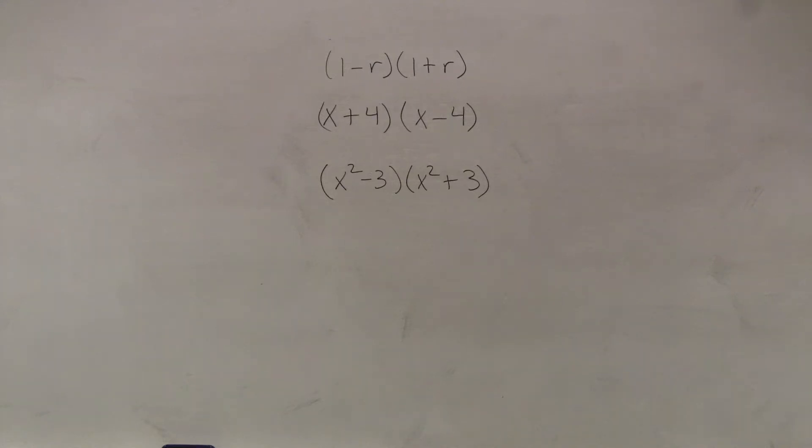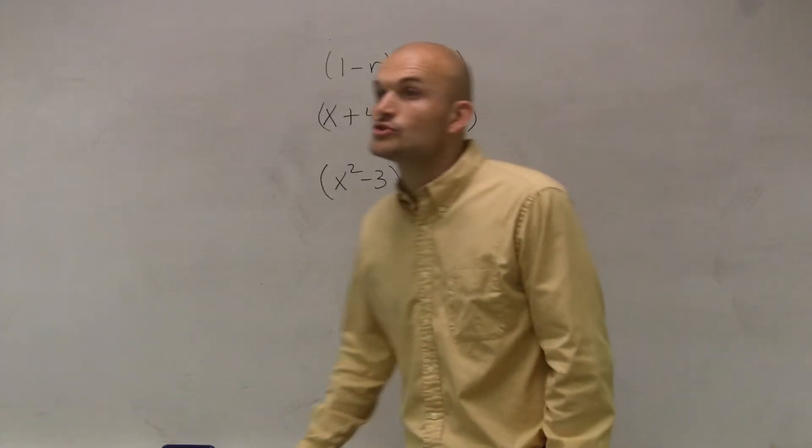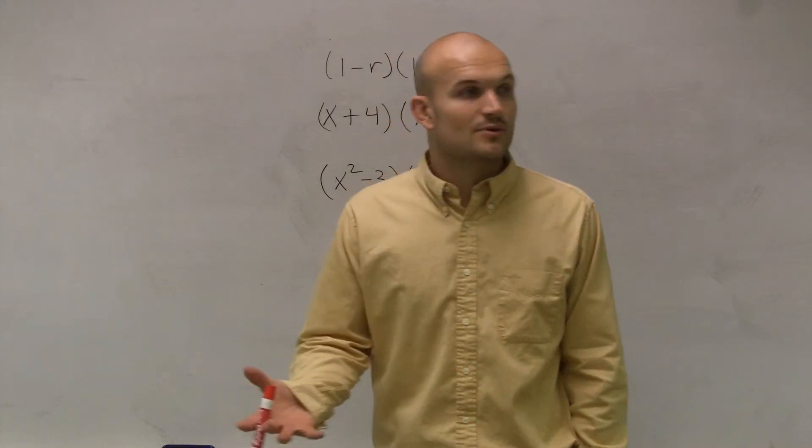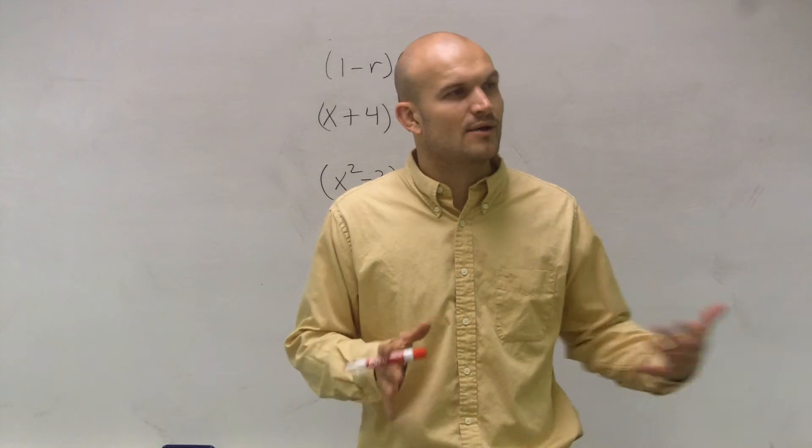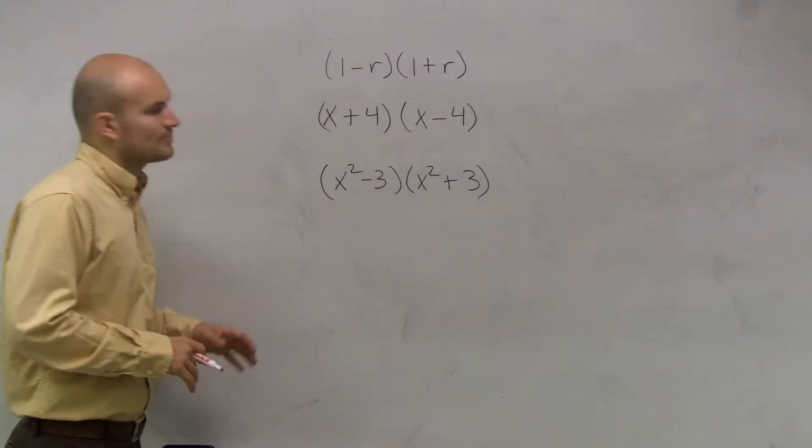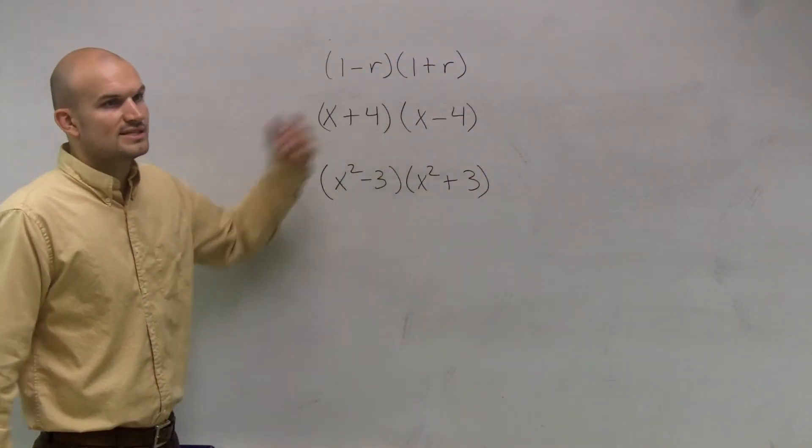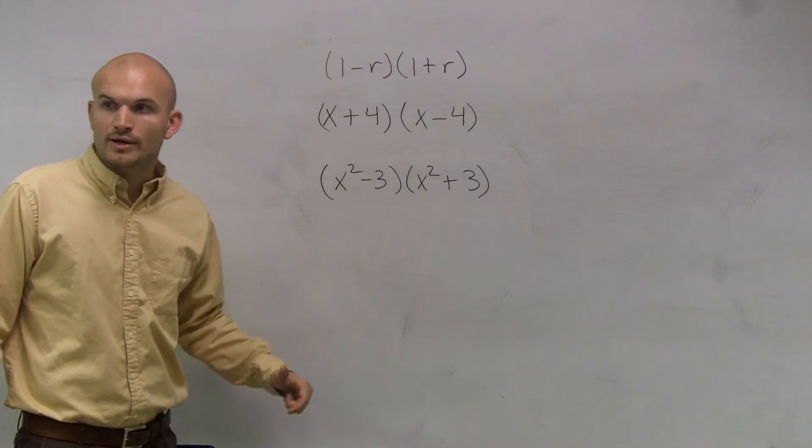Now, this is what we're going to call a difference of two squares. This is what we call a special factoring, which we haven't had a lot of time to discuss, but I want to show you the relationship real quick. So let's just pick two of these to multiply and go through them real quick. Let's pick x plus 4 and x minus 4.